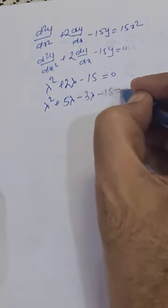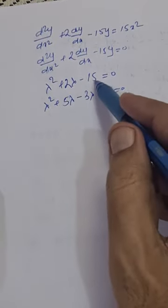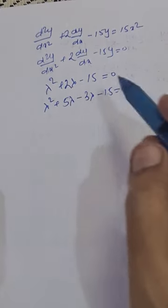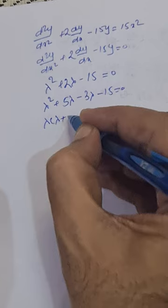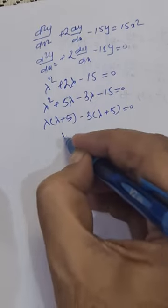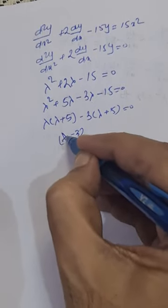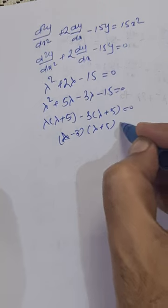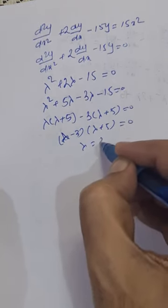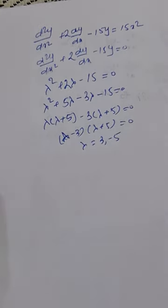Because 15 can be factorized as 5 × 3, which have a difference of 2, we can write: λ(λ + 5) − 3(λ + 5) = 0, or (λ − 3)(λ + 5) = 0, giving λ = 3 or λ = −5.